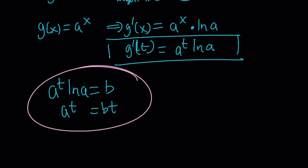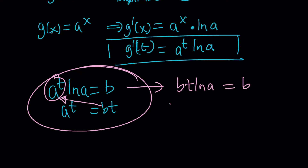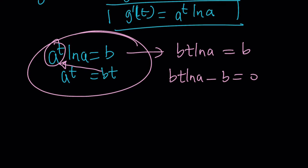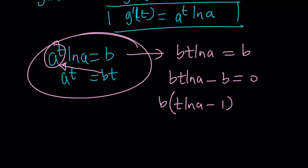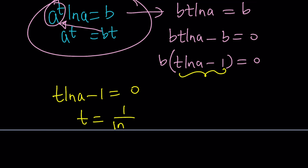We've got a system. Now we can replace a to the t with bt in the derivative equation, giving us bt times ln a equals b. We can factor out b — and if b is 0 we get y equals 0, a straight line. But focusing on the nontrivial case, dividing through gives t times ln a minus 1 equals 0, so t equals 1 over ln a. Interestingly, the value of t does not depend on b — it only depends on a.